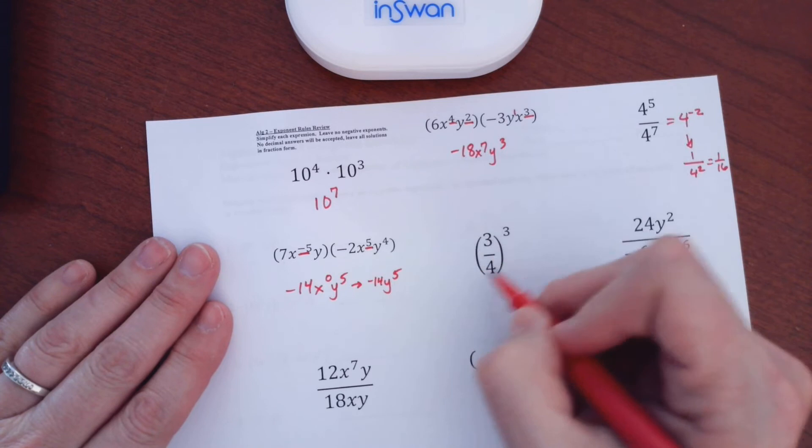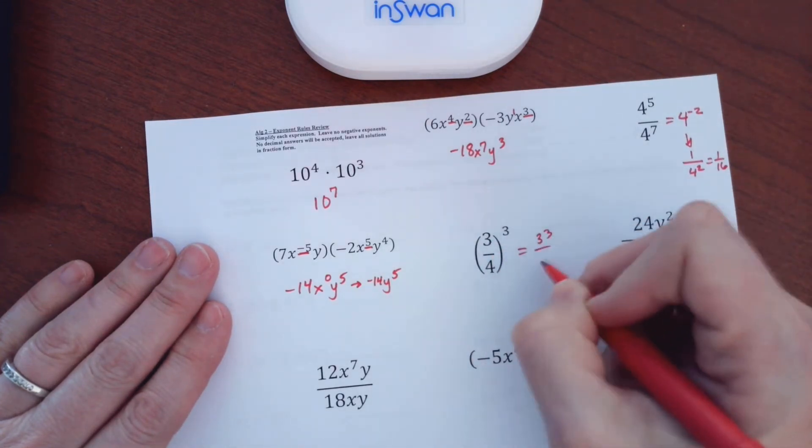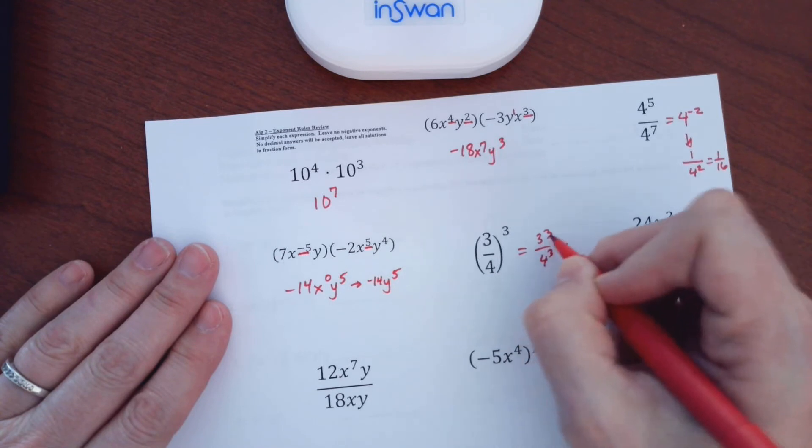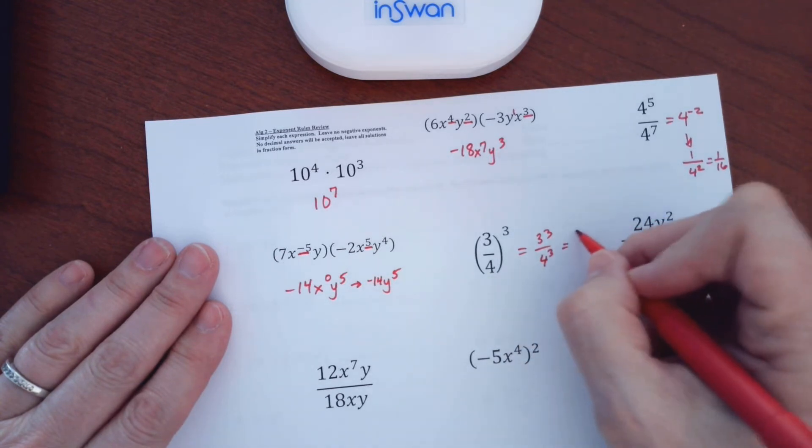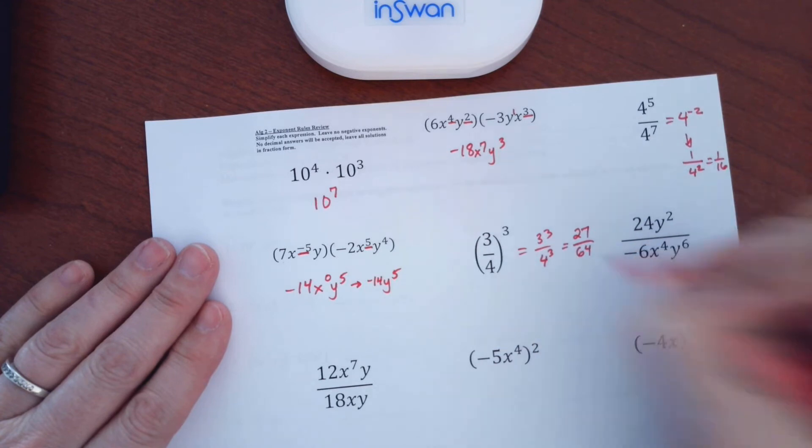We have a power on something. We do it on everything. So this means 3 to the third, and also 4 to the third. So work that out. 3 to the third is 3 times 3 times 3, so 27. And 4 times 4 times 4 is 64.